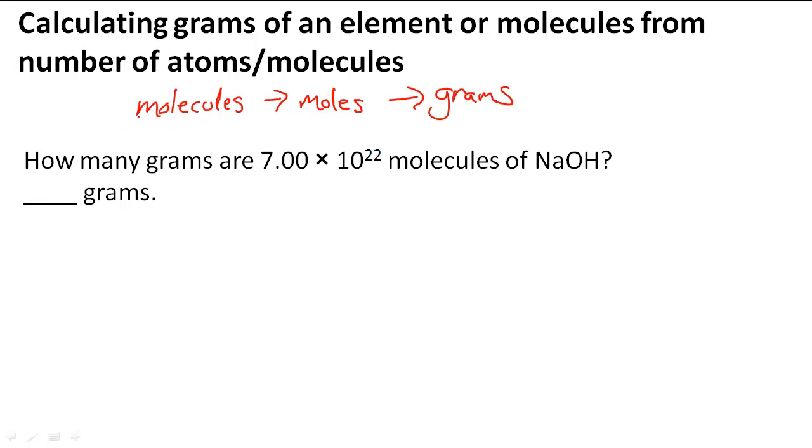To go from molecules to moles we have to divide molecules that were given by Avogadro's number, and then we'll get moles. Then to go from moles to grams we have to multiply the moles by molar mass, and then we'll get the grams that we're looking for.